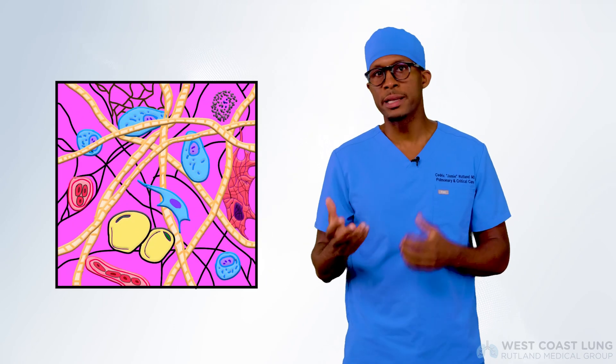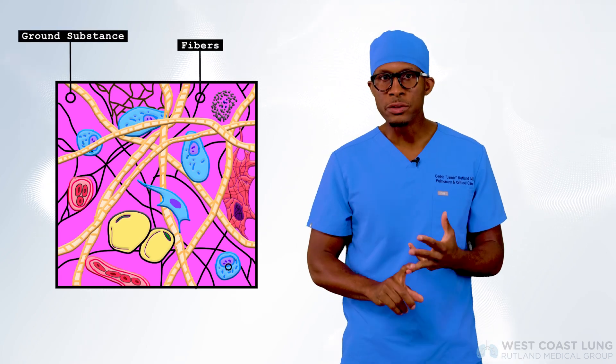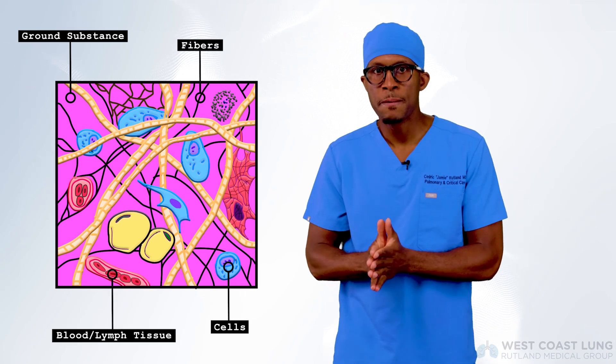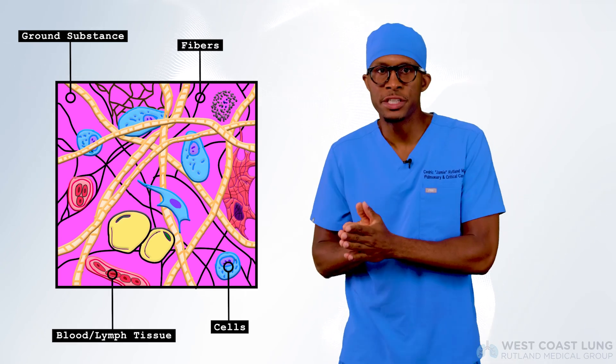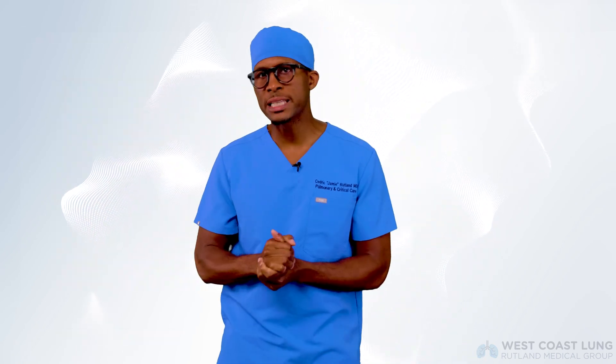It's composed primarily of an extracellular matrix and a limited number of cells, but most connective tissues are composed of ground substance, fibers, cells, even blood and lymph tissue, which are specialized fluid connective tissues without fiber. There are over 200 connective tissue disorders, but today we're going to focus on autoimmune connective tissue disease.